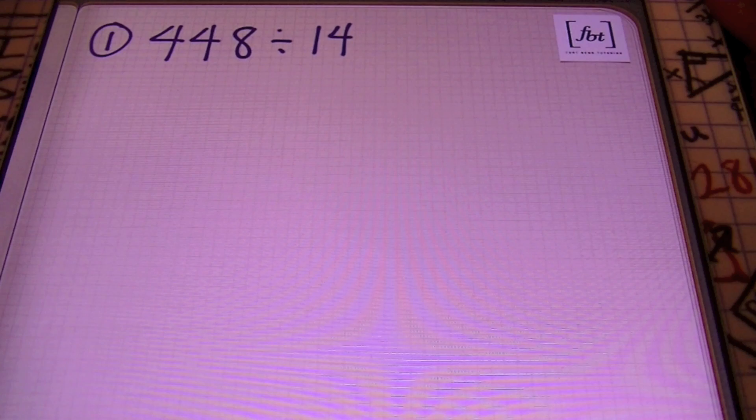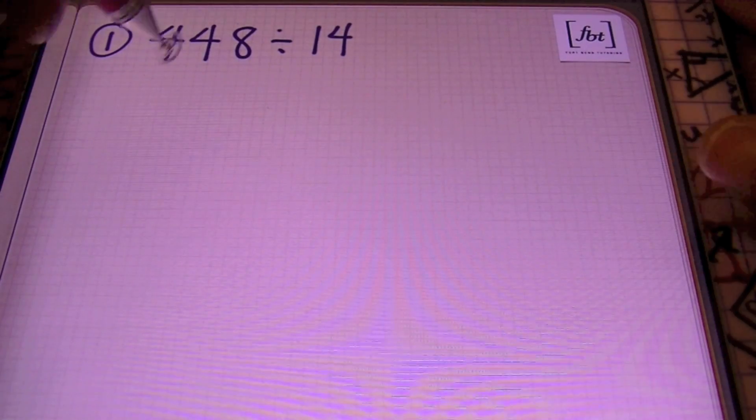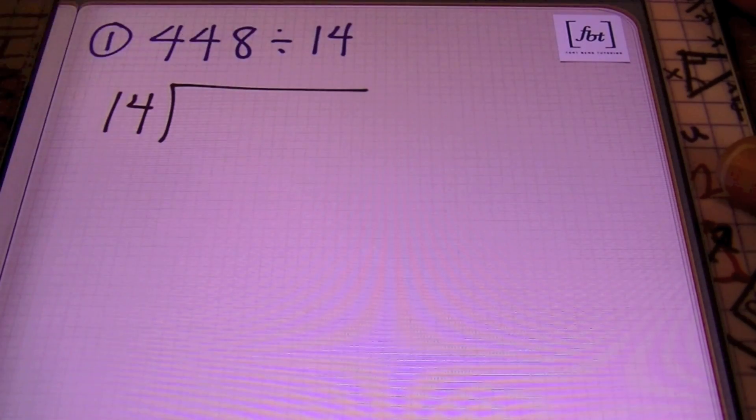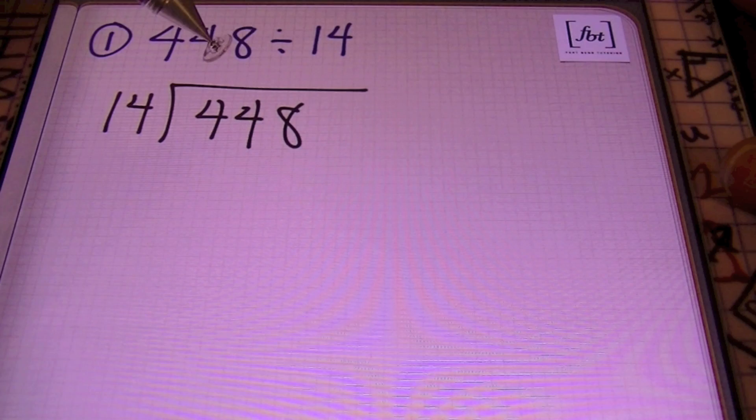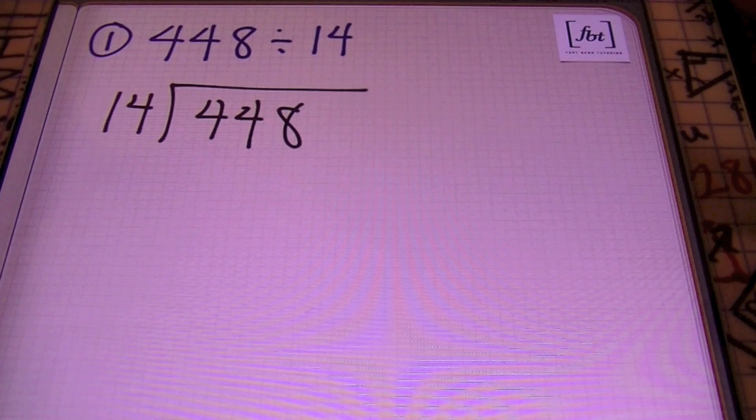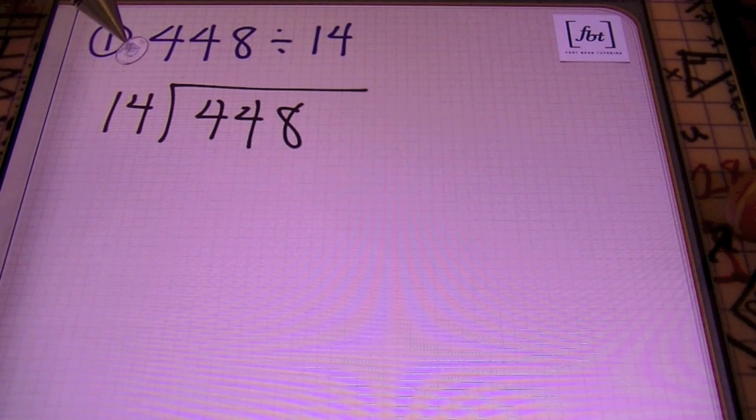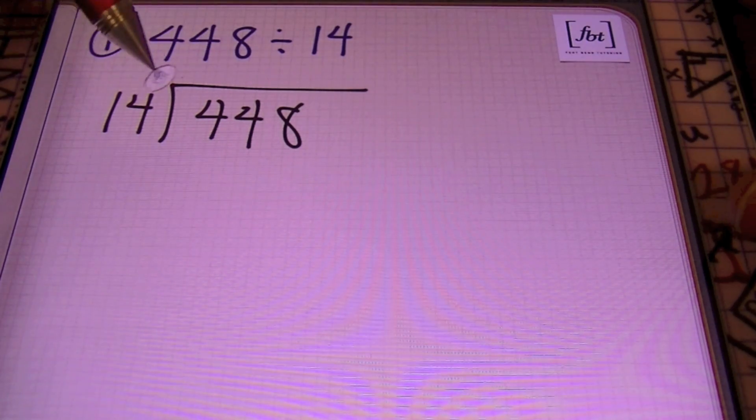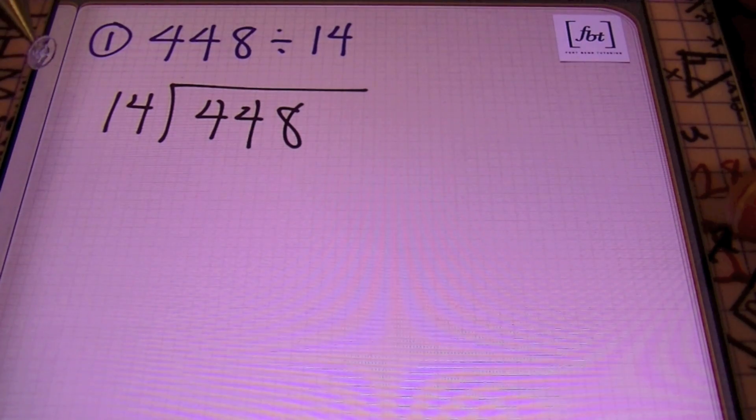In problem number one, I have 448 divided by 14. So first of all, let's set this up as a long division problem. So here, I'm going to write this as 14 going into 448. That's the first thing I do. Then I will implement one or both of the methods that I just said. For instance, if I look at the number 14 and I look at the first two digits of the dividend here, that 448, notice that 14 and 44 is close to 15 and 45. So therefore, I'm going to estimate and say, okay, well, this 14 is close to the number 15 that I'm used to. And I know that 15 will go into 45 three times. So therefore, it's a safe bet to see if 14 times 3 will get me close to that value of 44.